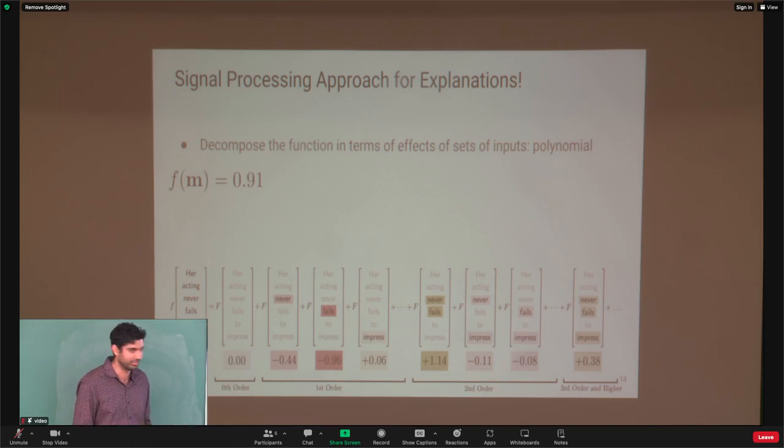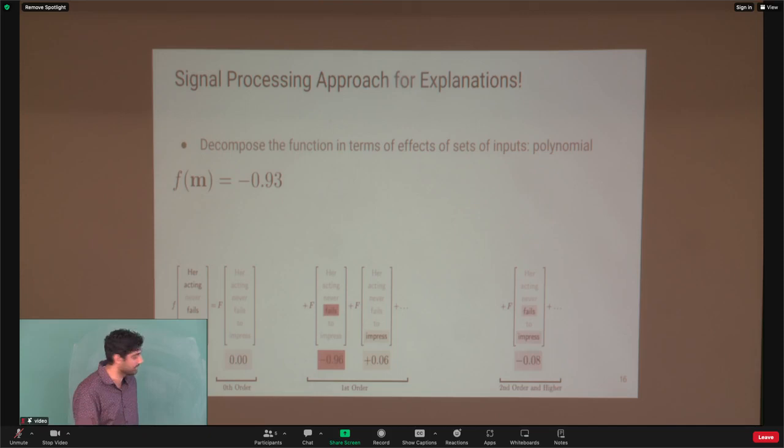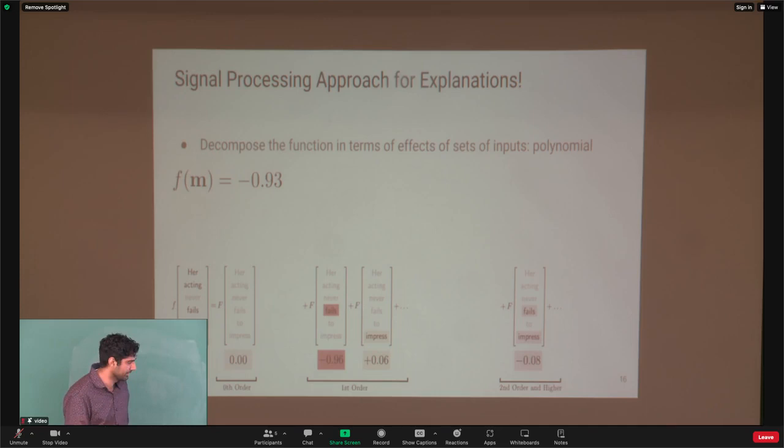To evaluate with masking the third word 'never', we set all places where the third bit appears to 0, add up, and get 0.93. This makes sense because 'her acting fails to impress' — the reviewer is not saying something good about her acting. So everything is consistent.